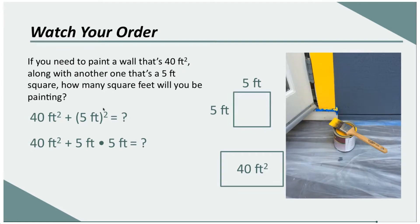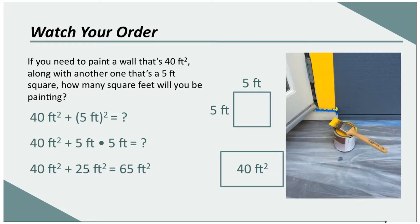So I'm going to start by working that exponent, finding what 5 feet squared equals. I know 5 feet squared means 5 feet times 5 feet, which would get me 25 feet squared.